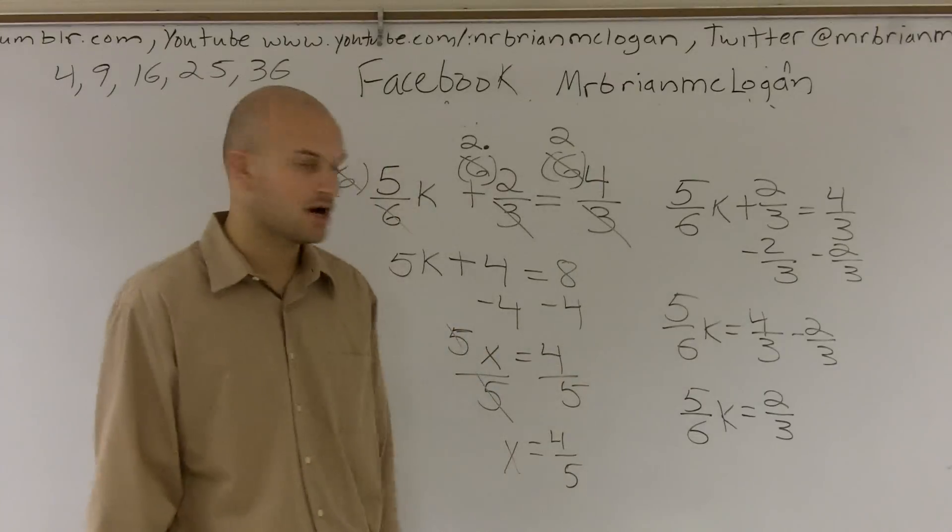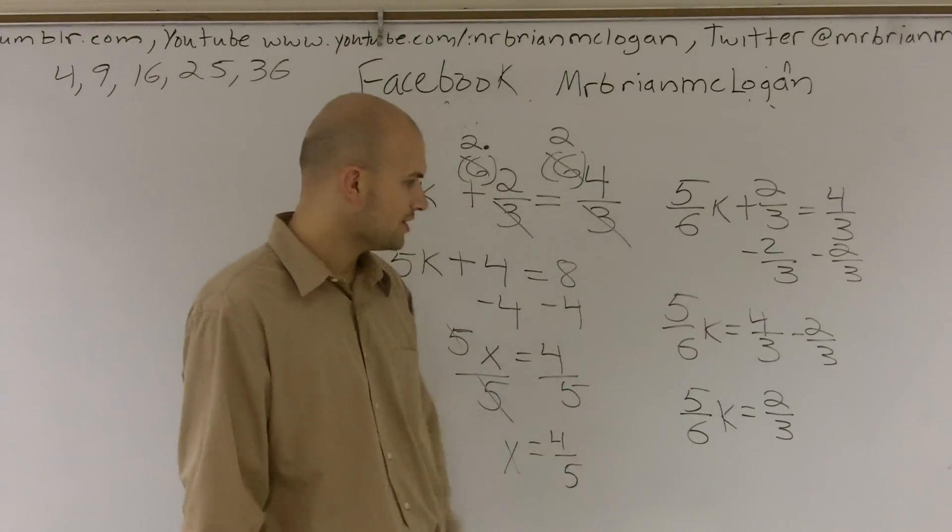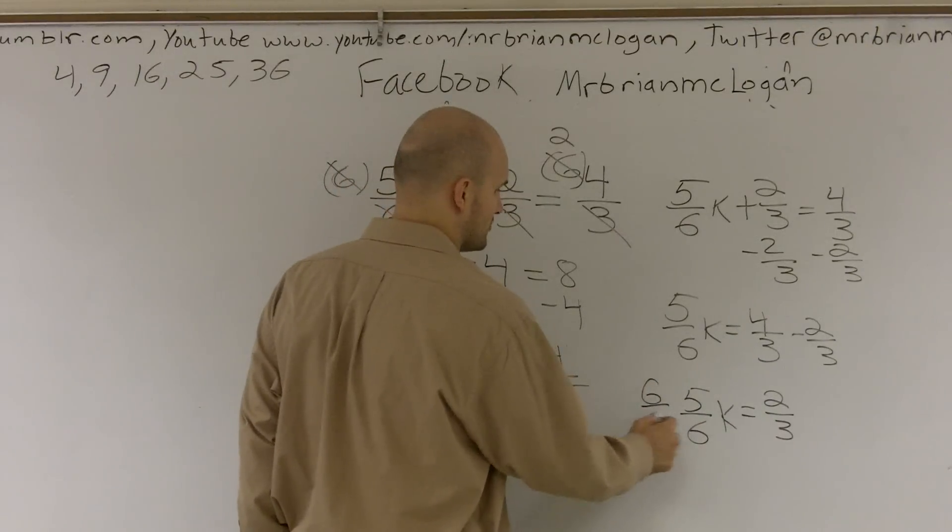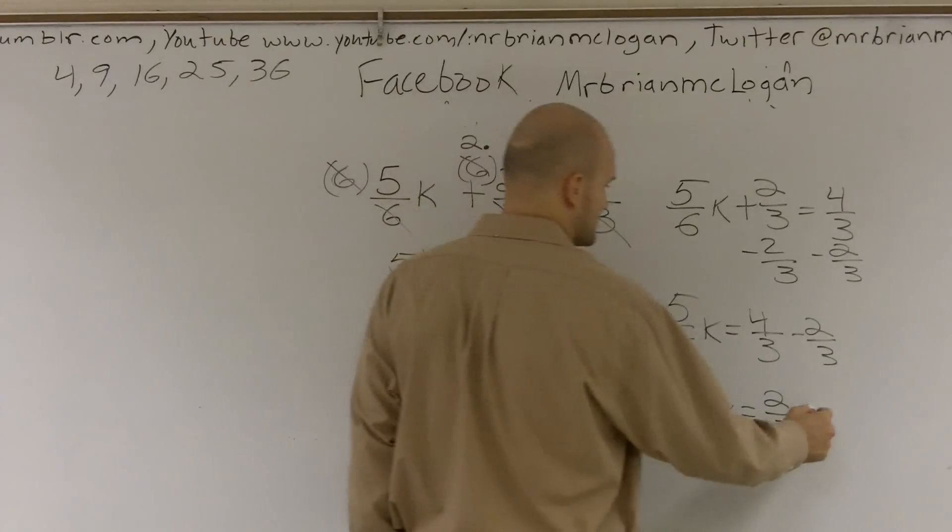Then to undo multiplication of a fraction, we have to multiply by the reciprocal. So we multiply by 6 fifths on both sides.